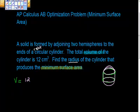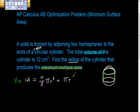We know that the volume is 12 centimeters, and we know that the volume is made up of two hemispheres, which is one sphere, and one right cylinder. So the volume of a sphere is four-thirds pi r cubed, and the volume of a right cylinder is pi r squared h.